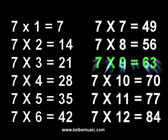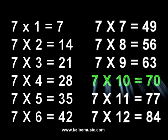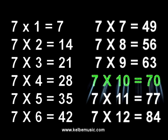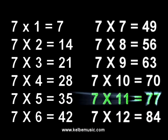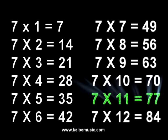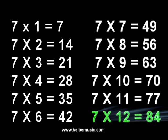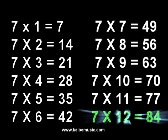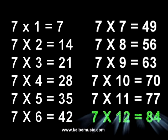7 x 8 is 56. 7 x 9 is 63. 7 x 10 is 70. 7 x 11 is 77. 7 x 12 is 84.